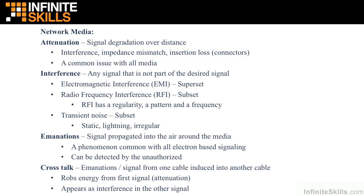We have a superset called electromagnetic interference, or EMI, which uses electron flow and magnetism to push those electrons around — this is the superset category covering all forms of this interference. However, there's a subset called radiofrequency interference, or RFI. A key term here is frequency: if there is any regularity to the interference, it's generally considered to be RFI. Frequency meaning it frequently presents itself in some consistent pattern of interference. RFI is a subset of EMI.